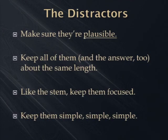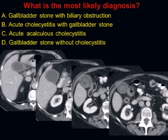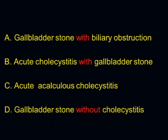Keep them simple, simple, simple. One idea in the stem, one idea in the answers. Here we have a 49-year-old woman with right upper quadrant pain. The choices are: gallbladder stone with biliary obstruction; acute cholecystitis with gallbladder stone; cholecystitis without calculus; gallbladder stone without cholecystitis. Why did we toss this question? It's too confusing — every answer is two things. You could say the first part's right but the second half isn't. Every one is a double. It's just too much to think about.